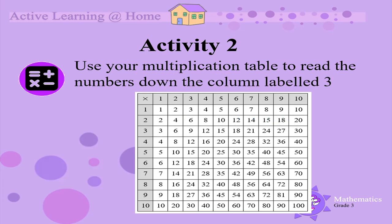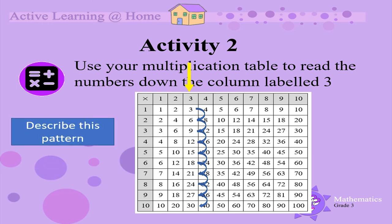We can describe this pattern by saying that the numbers get bigger by 3 every time. Now use your multiplication table to read the numbers down the column labelled 3. Here is the column labelled 3. Let's read the numbers together: 3, 6, 9, 12, 15, 18, 21, 24, 27, 30. Look at the pattern that has formed. Describe this pattern. We can describe this pattern by saying that the numbers get bigger by 3.